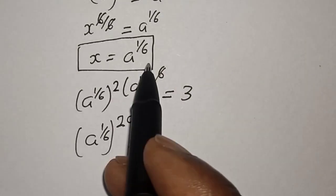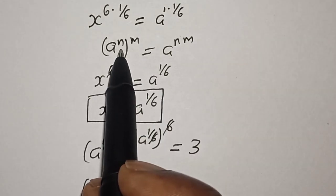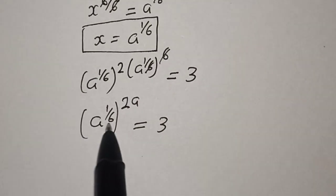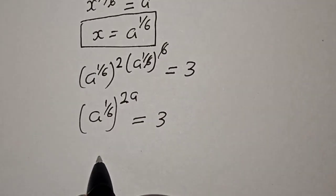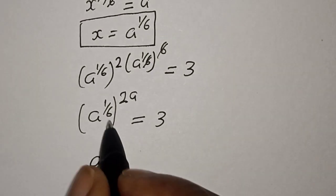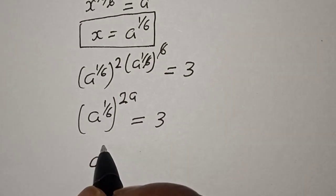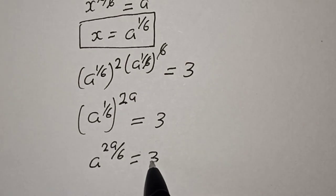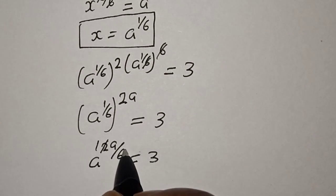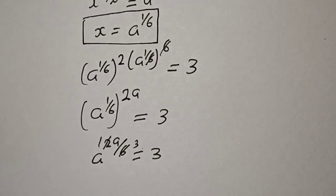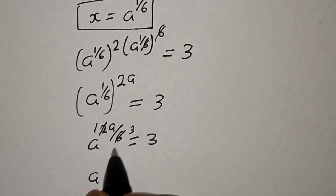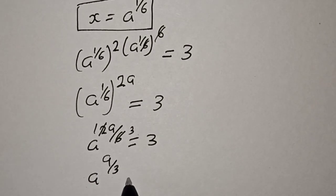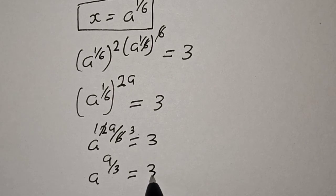We apply the same rule where a raised to power n raised to power m is equal to a raised to power n times m. So this becomes a raised to power 1 times 2a, giving us 2a over 6 is equal to 3. Simplifying, we have a raised to power a over 3 is equal to 3.